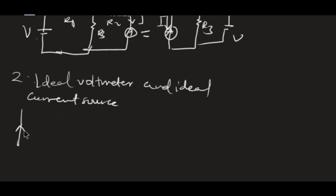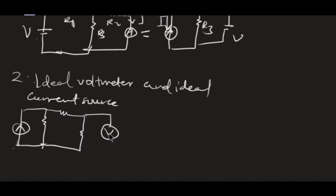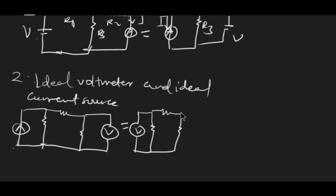So likewise, I can have my current source here, then resistors across the network, with my voltmeter measuring the voltage. This will be equal to when I bring my voltmeter to this side and the ideal current source comes to the other side. I have only interchanged the position of the current source and the voltmeter, and the voltmeter reading will not be affected. This is the whole scenario of the reciprocity theorem.